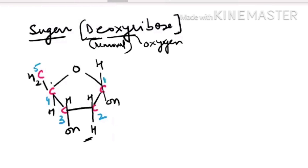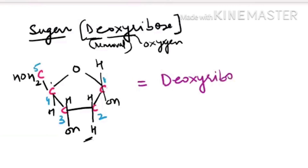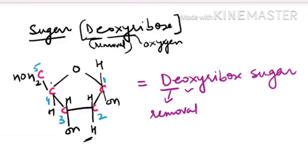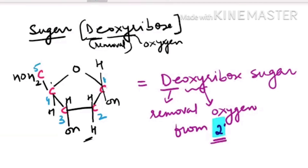At the fifth carbon there is CH2OH. The numbering of the ribose sugar: first carbon, second carbon, third carbon, fourth carbon, and the fourth is holding the fifth one — CH2OH. Please remember deoxyribose sugar is used in DNA. The removal of oxygen is done from the second position of the carbon. From the second position oxygen is removed, that is why the sugar is known as deoxyribose.